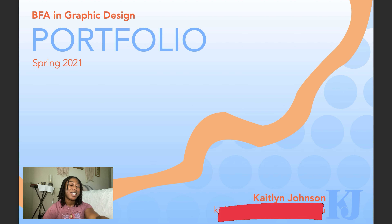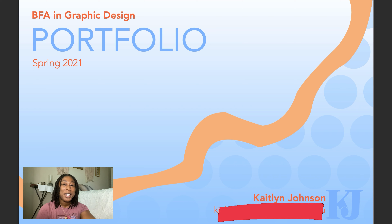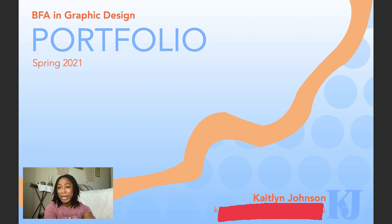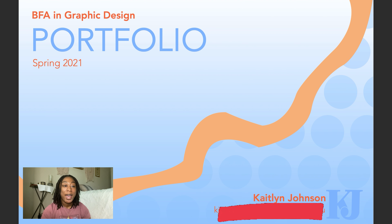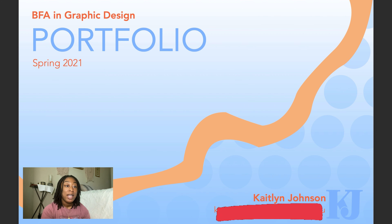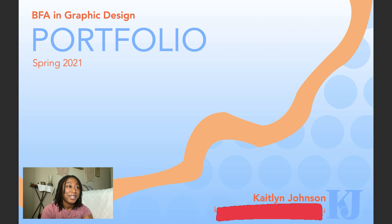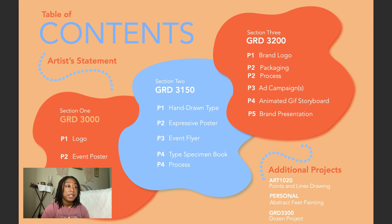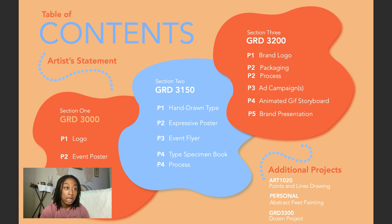I wanted orange and blue to be my theme colors because I really like those colors a lot. I just made a little pattern under it and layered some organic shapes on top of that, and that's how I got that effect on the first page. The next page was the table of contents, just laying out all the projects that I'll be including — the ones that I completed.